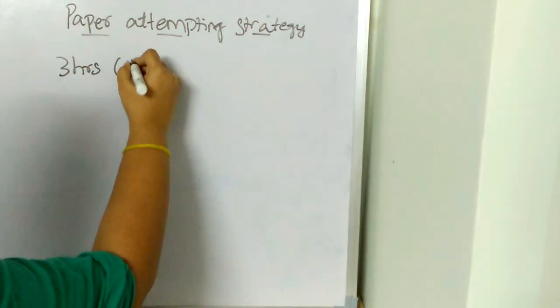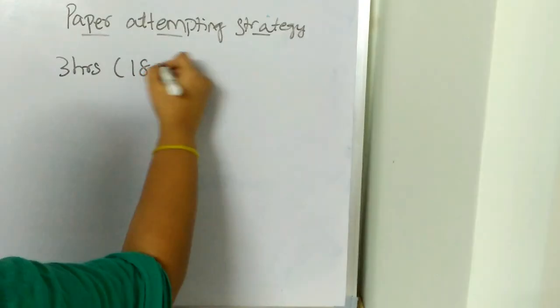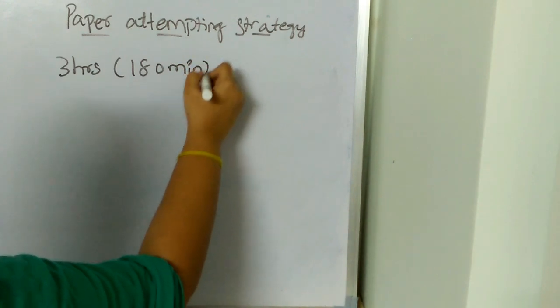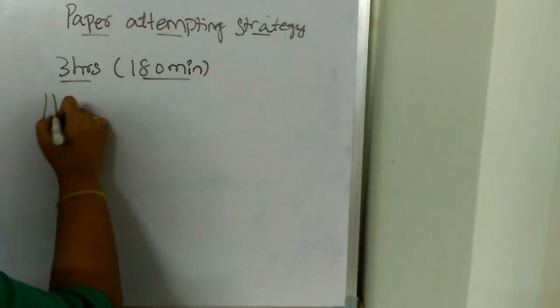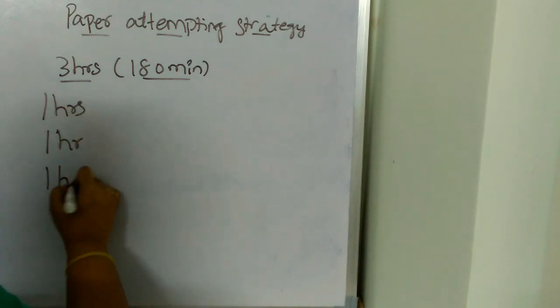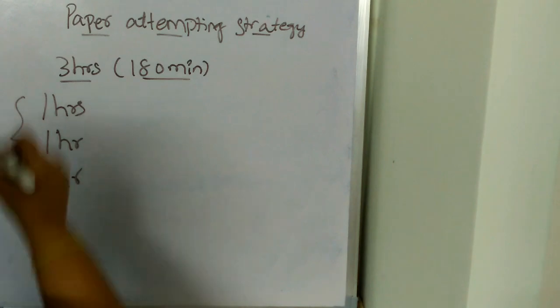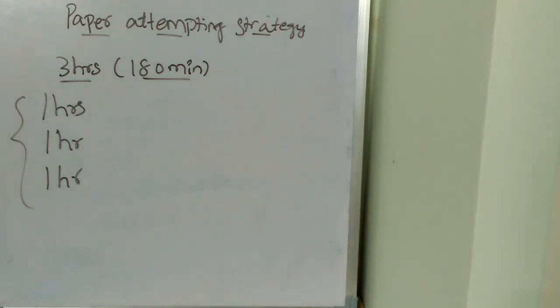Exam duration is 3 hours which is 180 minutes. So coming to 180 minutes or 3 hours, divide into 3 equal halves - 1 hour, 1 hour, 1 hour. Altogether exam duration of 3 hours we are dividing into 3 equal parts which is 1 hour each.